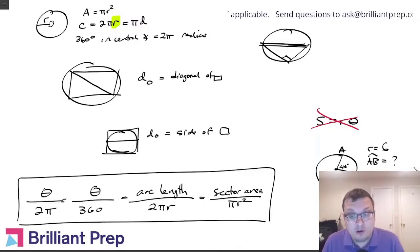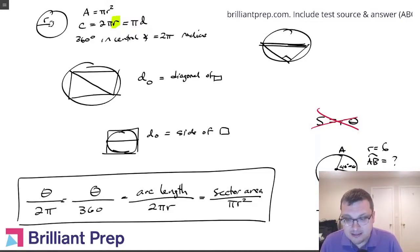We can set up our formula. We have the central angle, which is theta, so it's 40 out of 360. I want arc length, so I'm going to call that x, and I'm going to put that over 2 pi r, so 2 pi times 6.